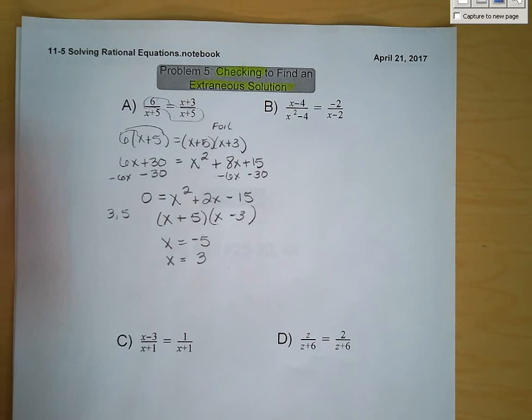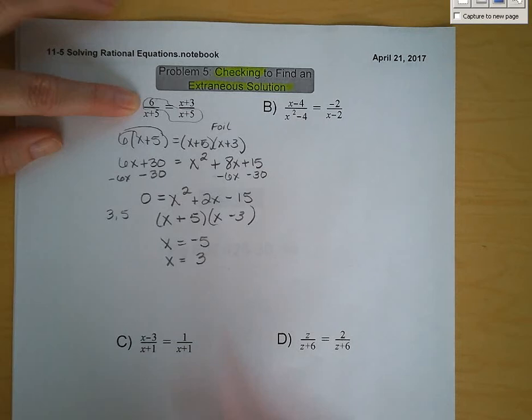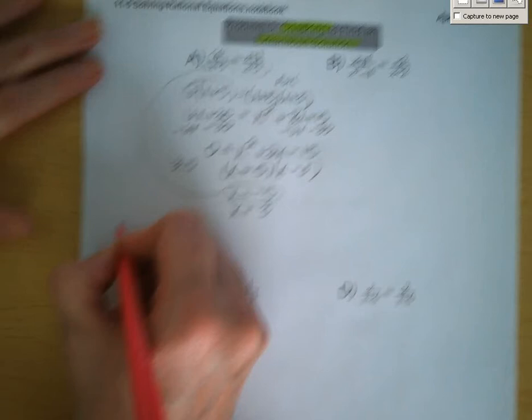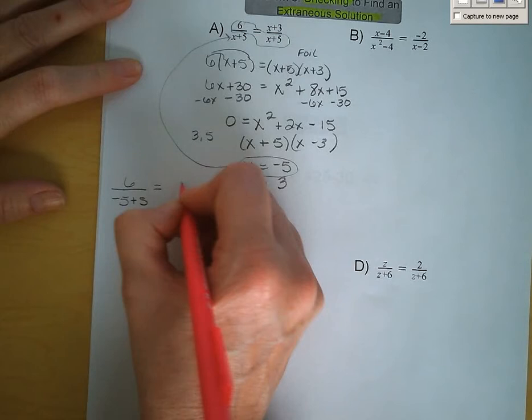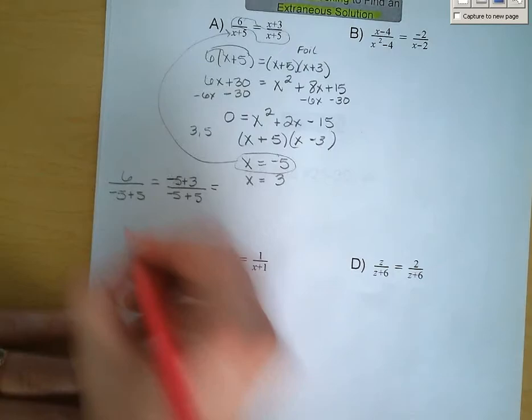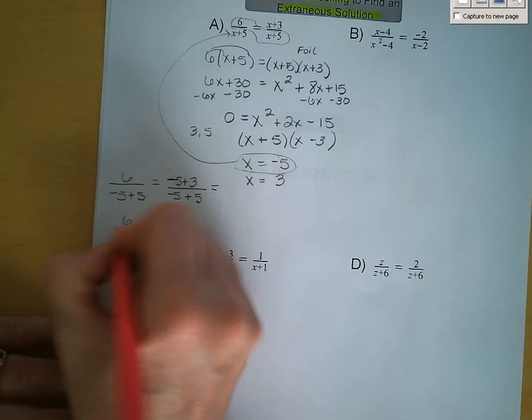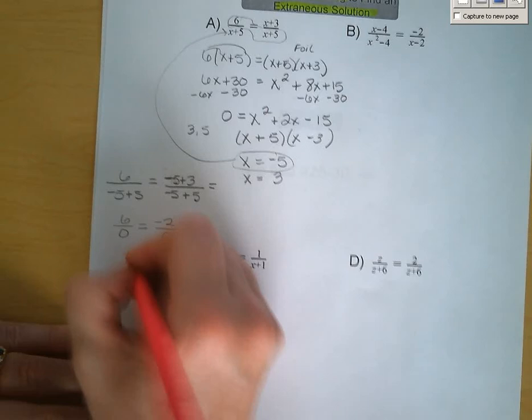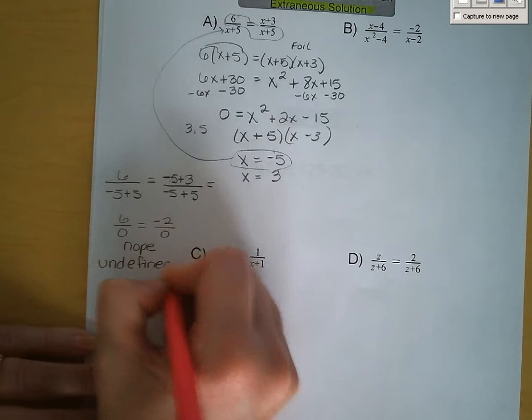Let's start with negative 5. Plugging it back in, we have 6 over negative 5 plus 5 is equal to negative 5 plus 3 over negative 5 plus 5. When we simplify that, we get 6 over 0 is equal to negative 2 over 0. Can we divide by 0? No — so this is undefined. Negative 5 is not a solution for this proportion.